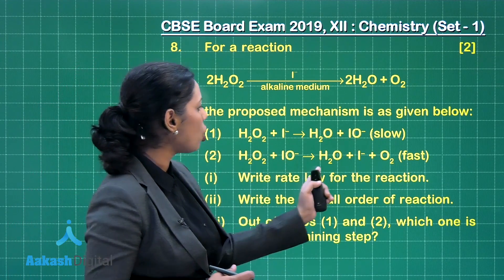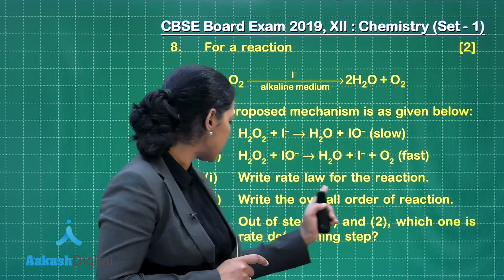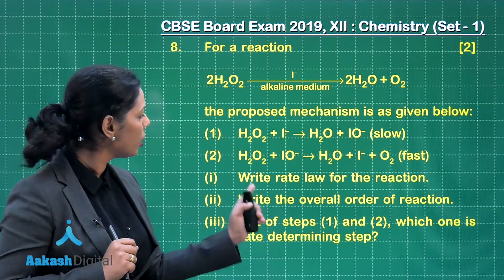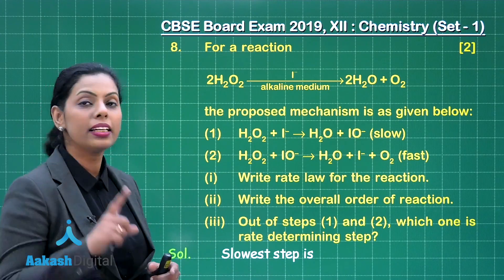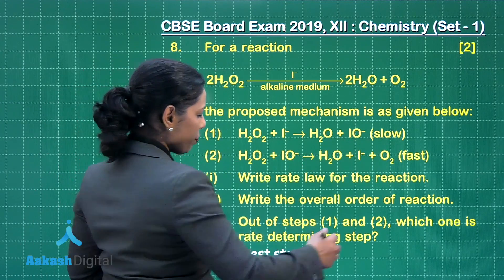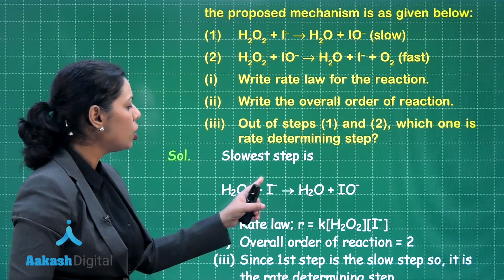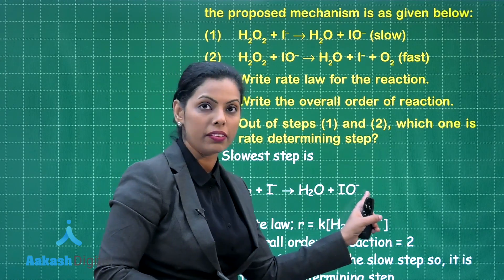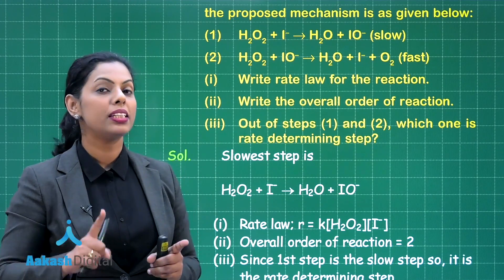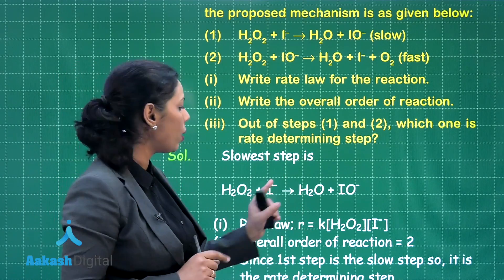For writing the rate law for the reaction you will obtain 1 mark, and for writing the overall order of the reaction and identifying which step is the rate-determining step, you will get 1 mark. You can answer this by first analyzing the slowest step, as it is clearly written that it is the slowest step. H₂O₂ combines with I⁻ ion to give H₂O and IO⁻, and on that basis you can find out the rate law.